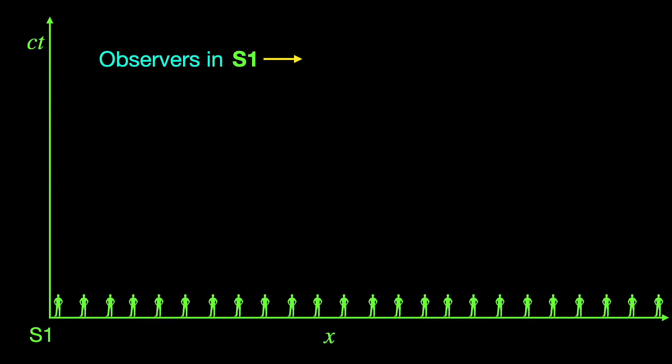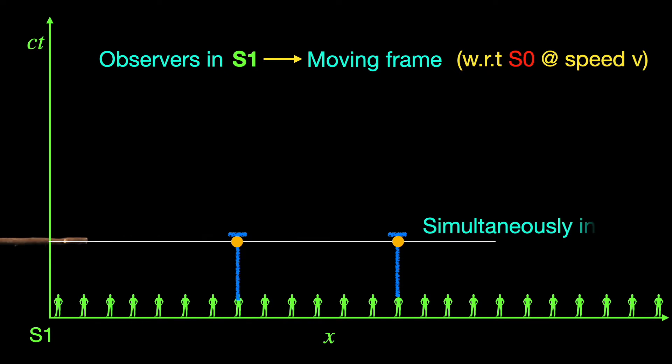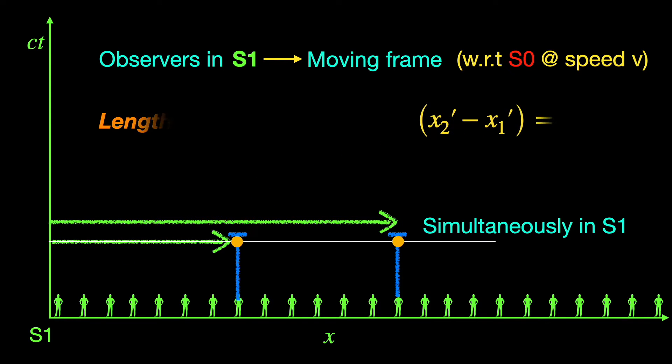Now, to the observers in another inertial frame S1, moving uniformly at a speed v with respect to our S0, our stick appears to be moving in the opposite direction with the same speed v. To measure the length of the stick from S1, they have to note the space coordinates of its two endpoints simultaneously so that the difference x2' minus x1' gives the correct length of the stick, say L1 as measured in S1 frame. The crucial condition here is simultaneity in S1 frame. That is, both coordinate readings must be taken at the same time instant according to the S1 frame's clock.